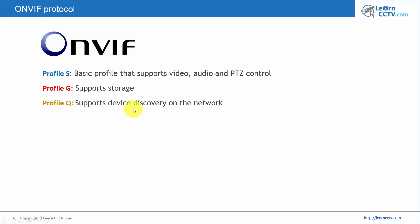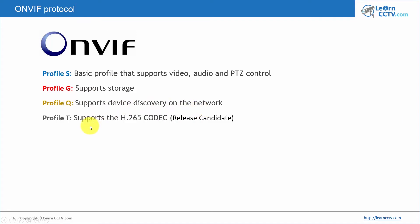Profile Q supports device discovery on the network. If you have a lot of devices on the network and don't want to find them manually one by one, you can use Profile Q with ONVIF to discover devices on the network. Profile T supports the H.265 codec — the compressor that allows more compression. Many manufacturers are already using H.265, but it's not yet compatible with ONVIF.